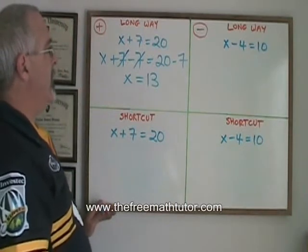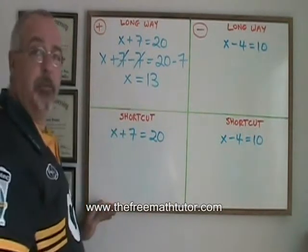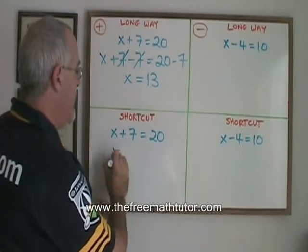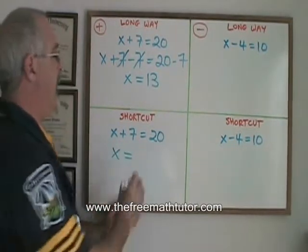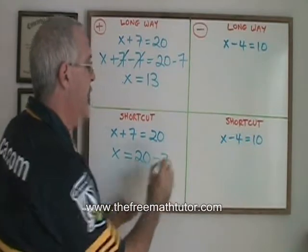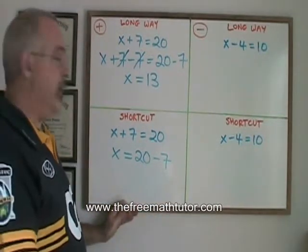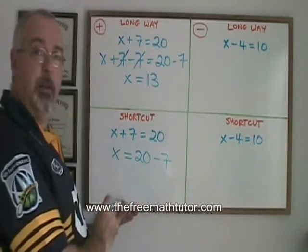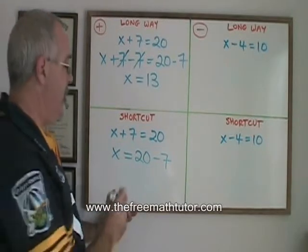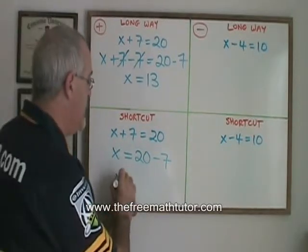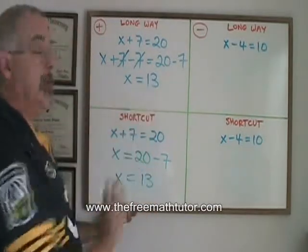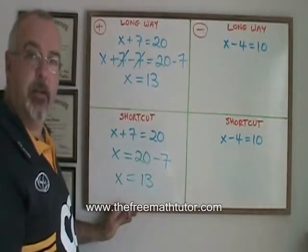With the shortcut, I don't bother showing that I'm subtracting 7 from the left side. I isolate my x and I subtract a 7 from the right side. I'm still really subtracting a 7 from both sides, but the 7s on the left are canceling and I don't have to show it. x is therefore equal to 20 minus 7, which is 13. It's the same answer, and it's the correct answer.